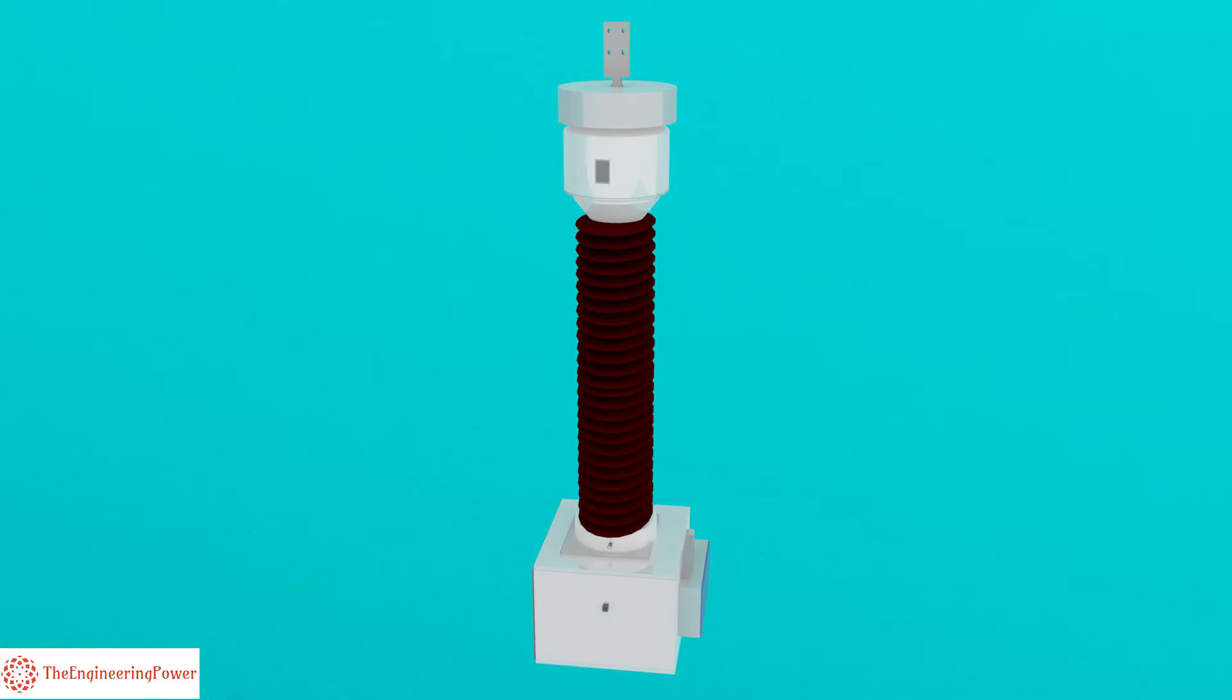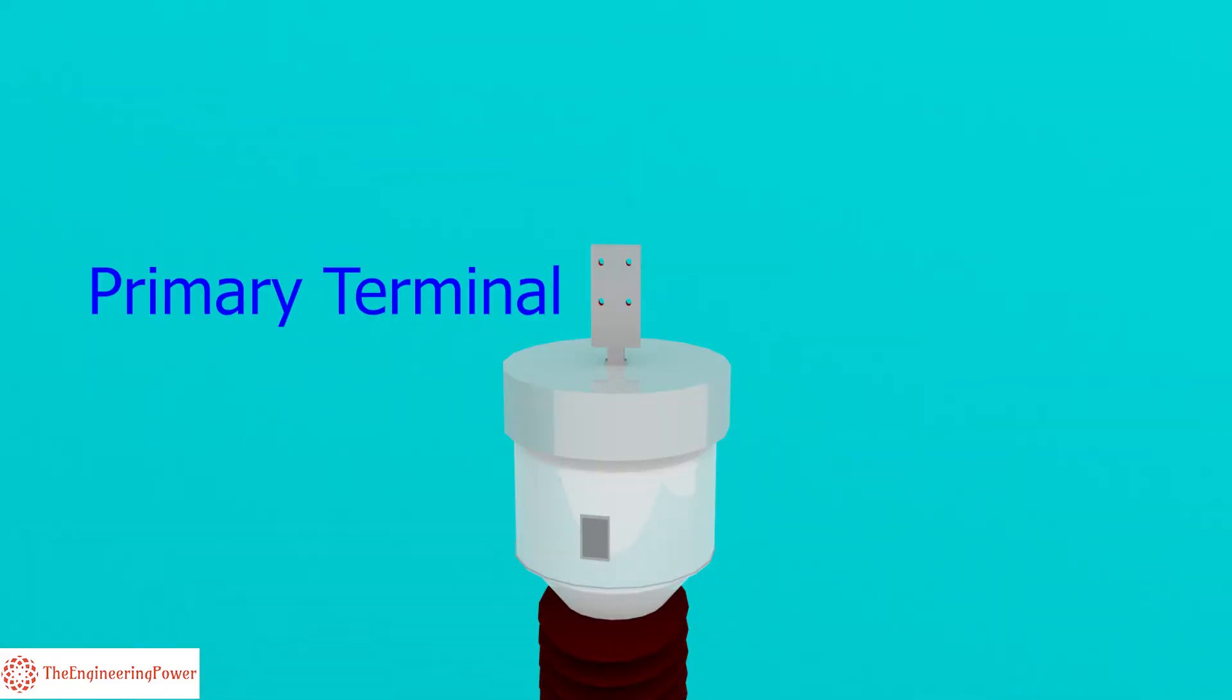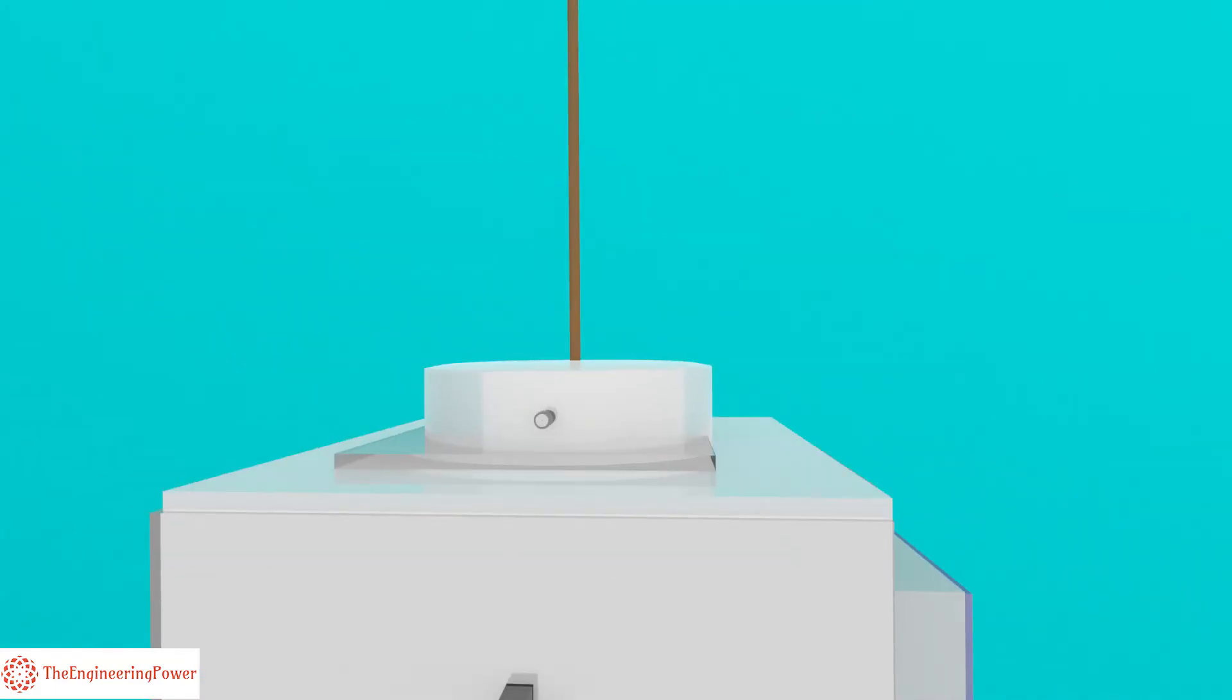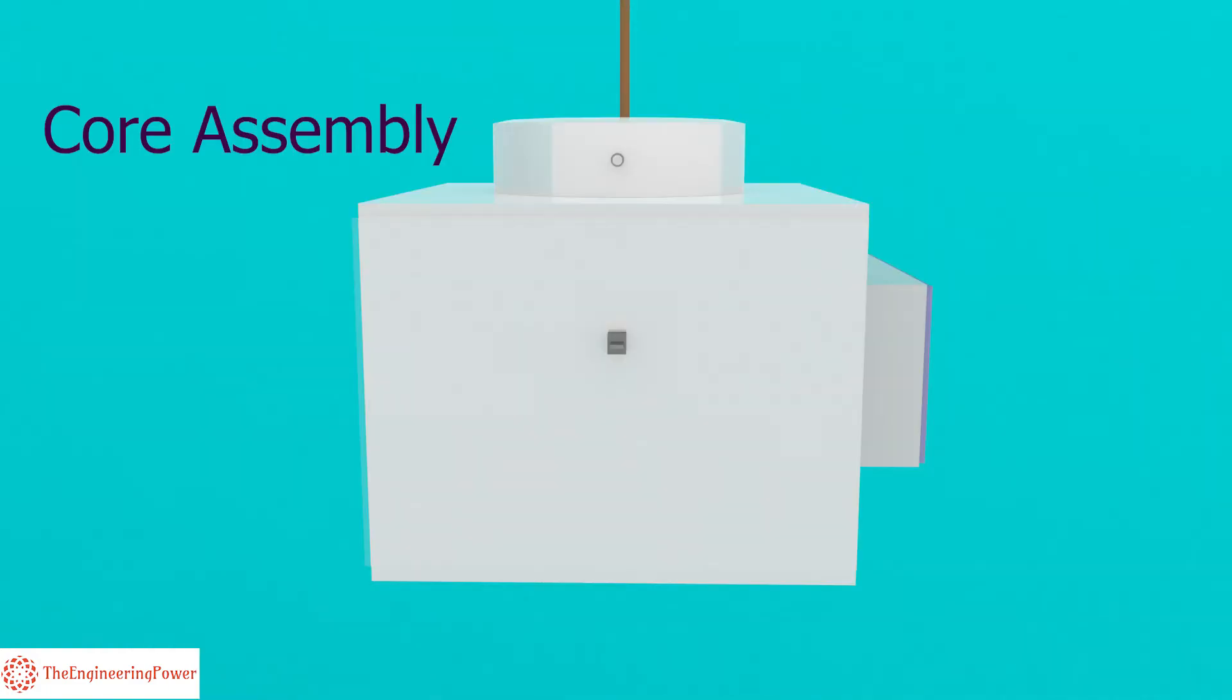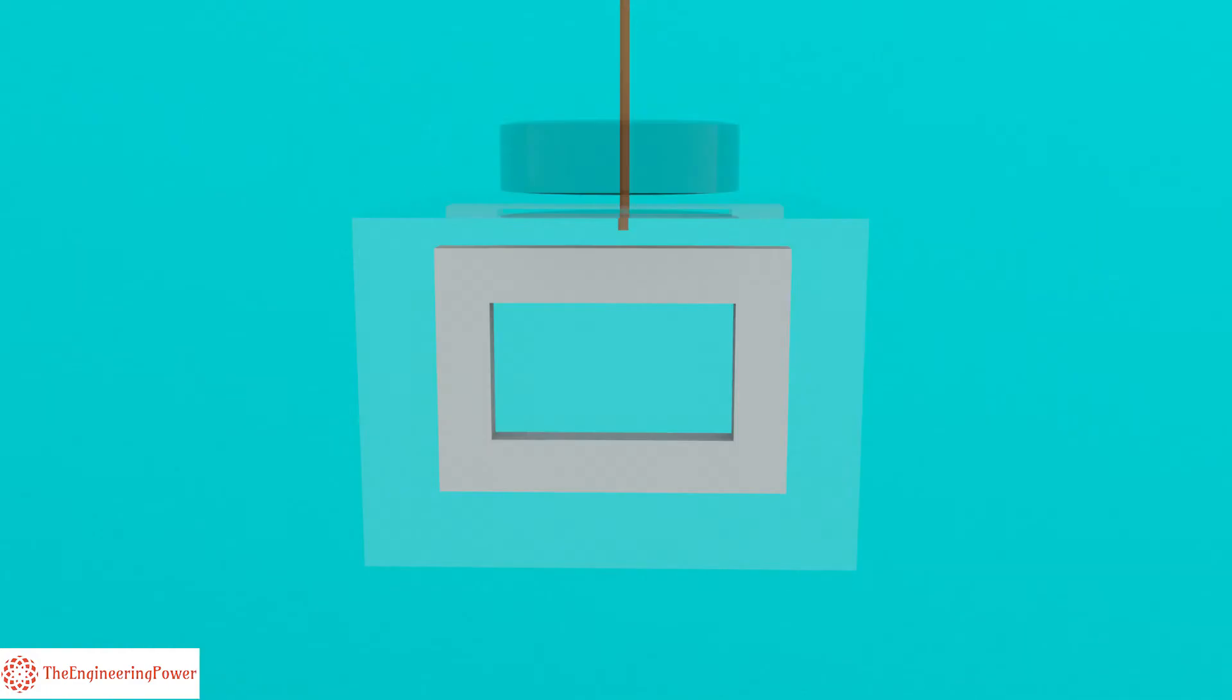That's how a PT looks like. That's the primary terminal of PT which is connected to the main power line through a dropper. A high power capacity conductor connects the primary terminal with the PT compartment at the bottom. In the bottom compartment the main core assembly is installed.